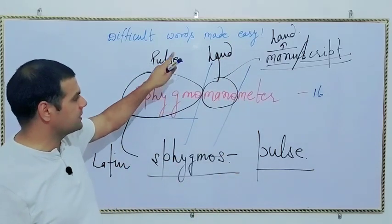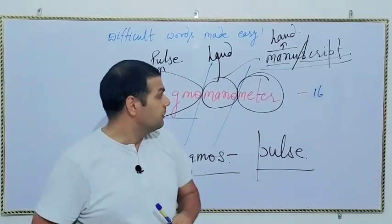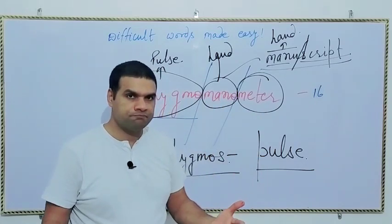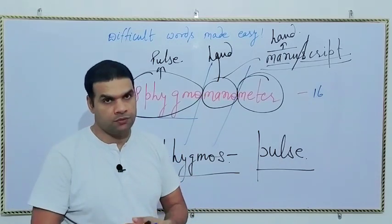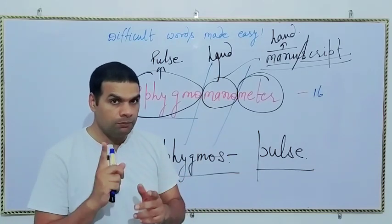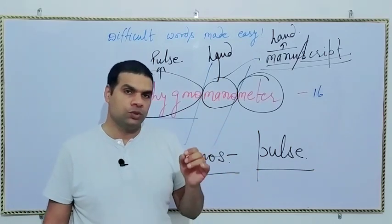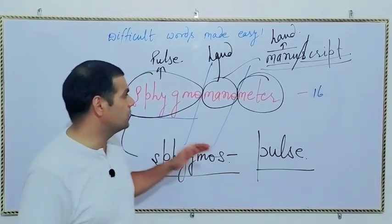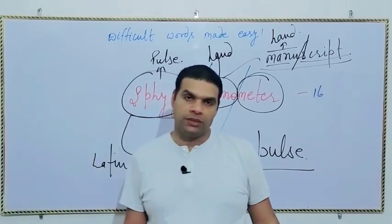Sphygmos means pulse, mano means hand, and meter you all know - meter is a device to measure something. So the meaning of a sphygmomanometer is what? A device which is used to measure the pulse of someone. So why do we measure pulse? In order to check their blood pressure, not temperature - temperature is checked with a thermometer. So sphygmomanometer basically is a device which is used to check someone's blood pressure so that medicine could be given. This is your blood pressure checking machine.